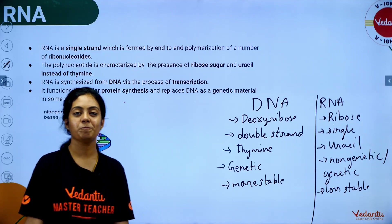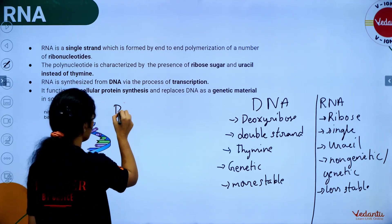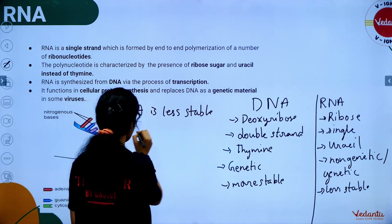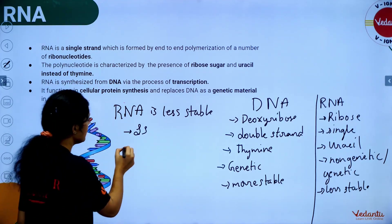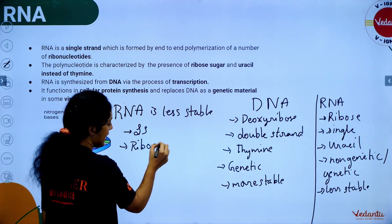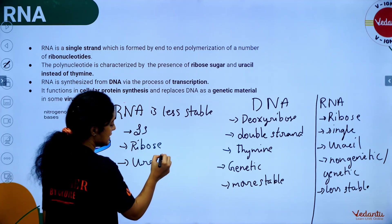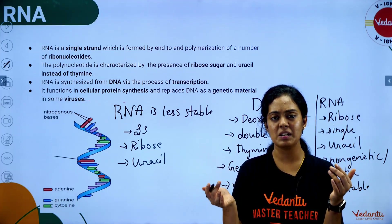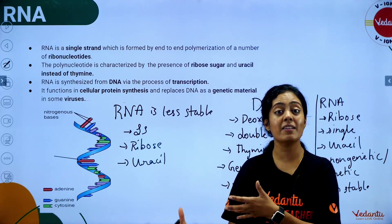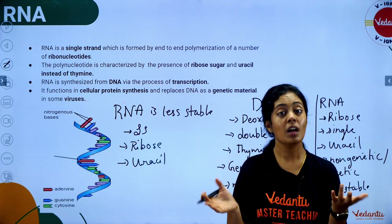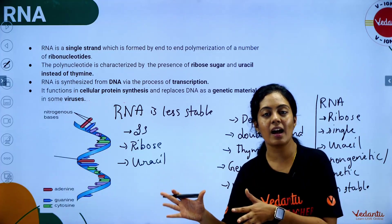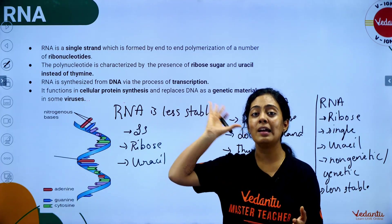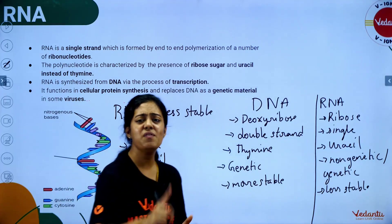Why is RNA less stable? Three reasons: it is single stranded, it has ribose sugar, and it has uracil — all less stable than their DNA counterparts. This is why RNA viruses like COVID-19 mutate rapidly — producing variants like Delta and Omicron — because RNA is unstable. DNA also mutates but at a slower pace. Nature selected DNA as the primary genetic material because of its greater stability.